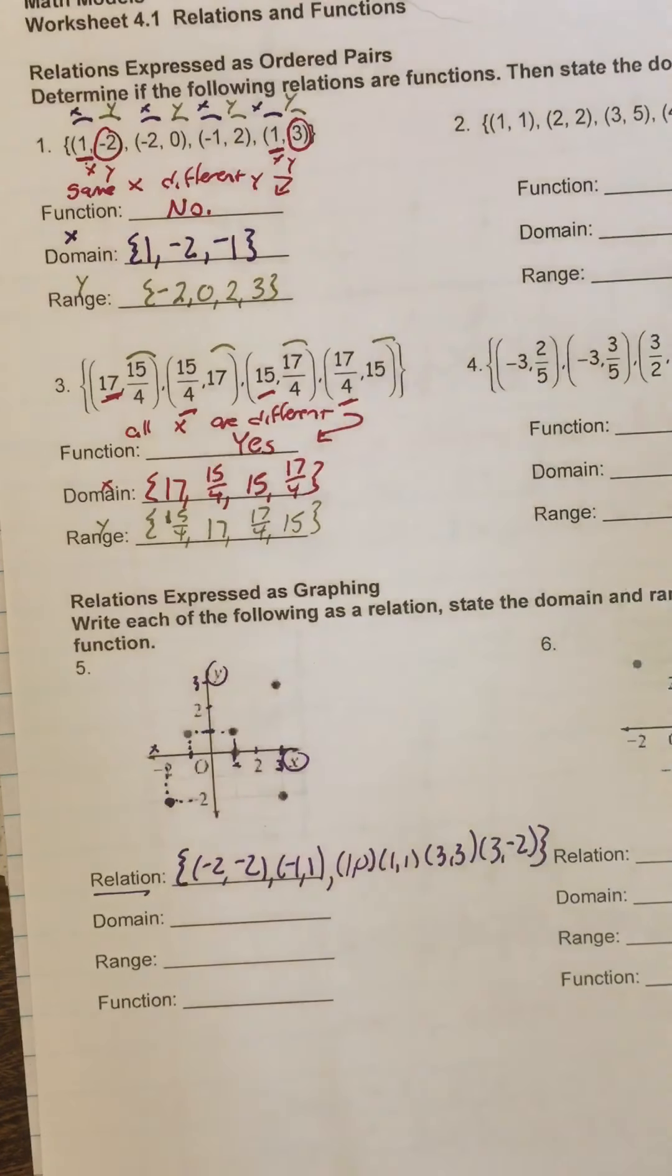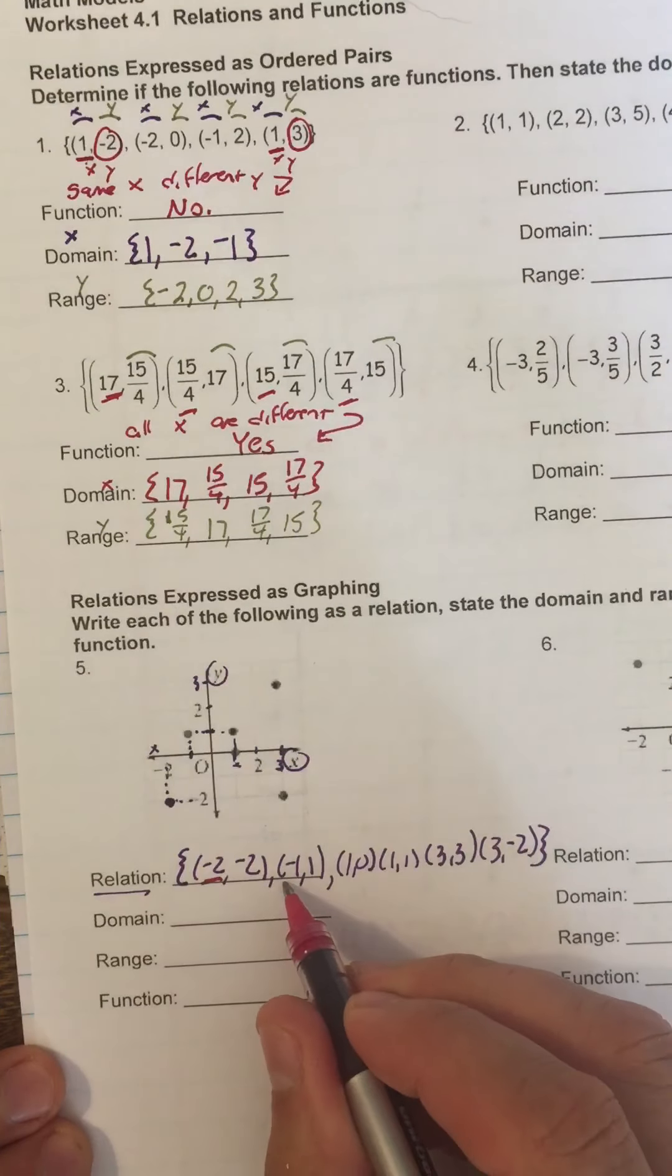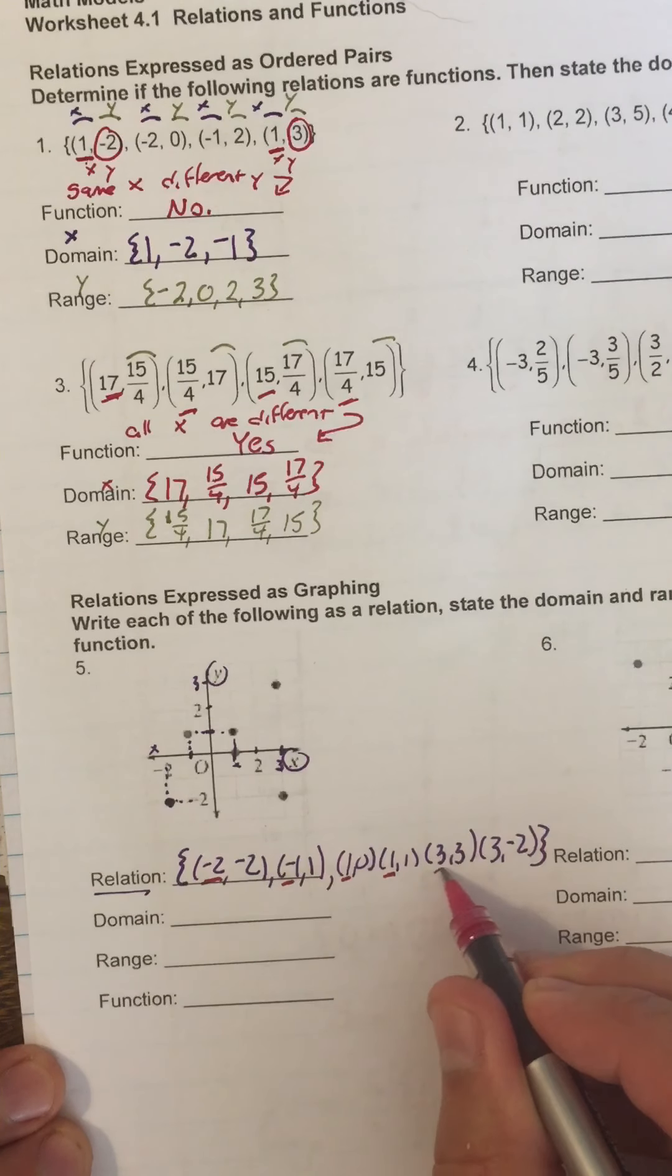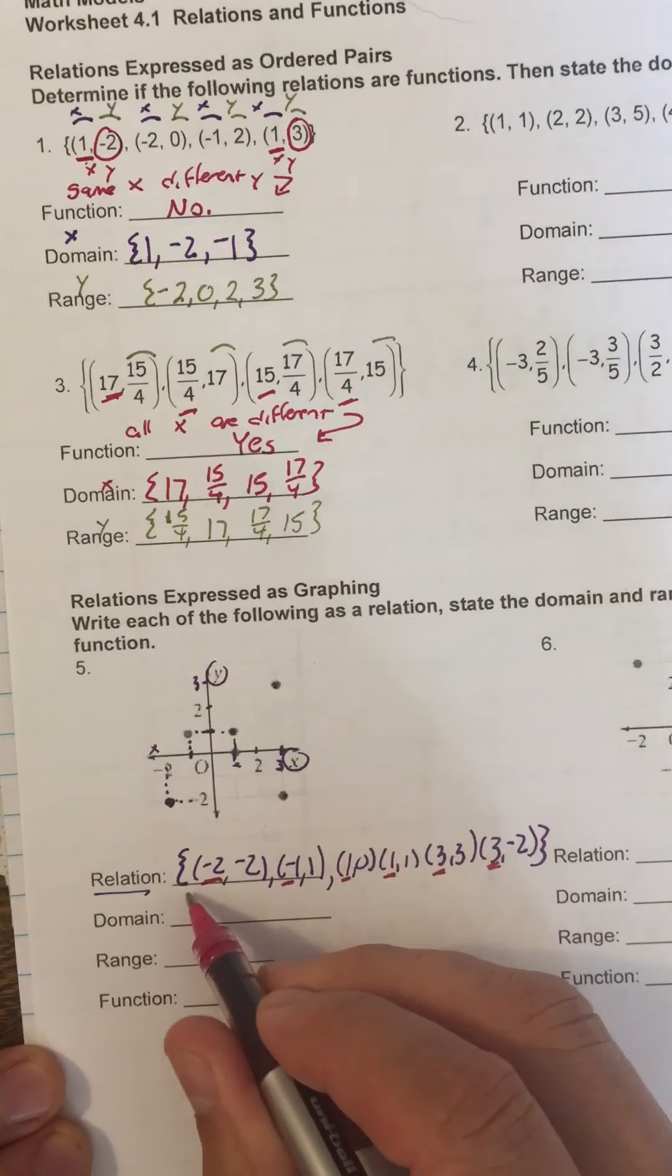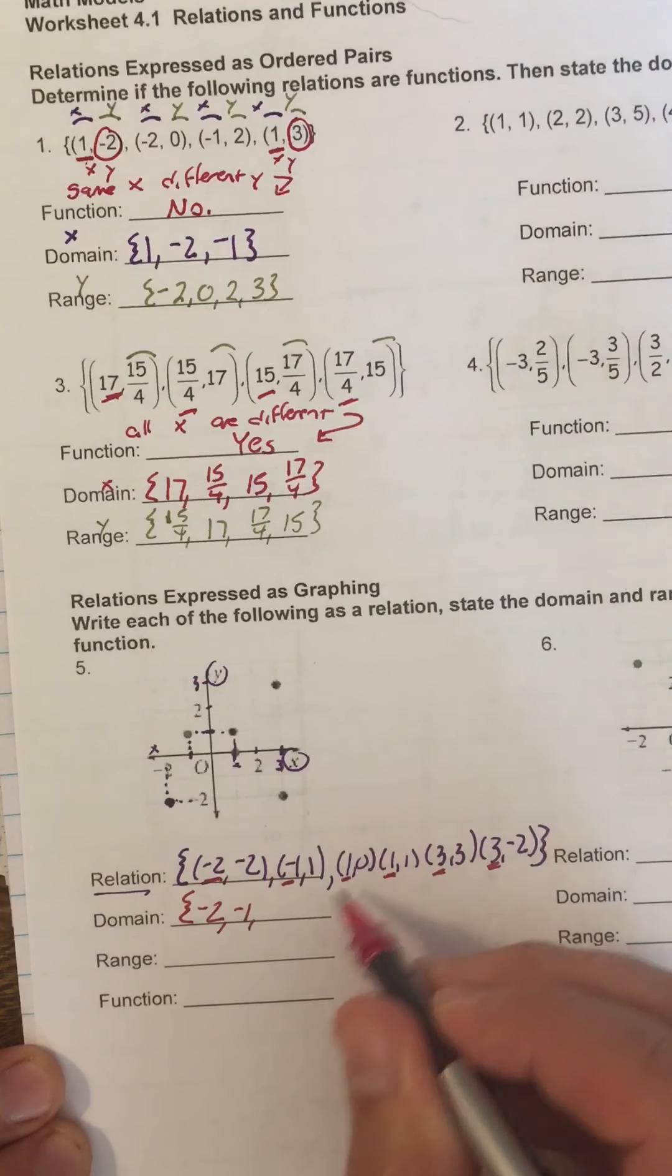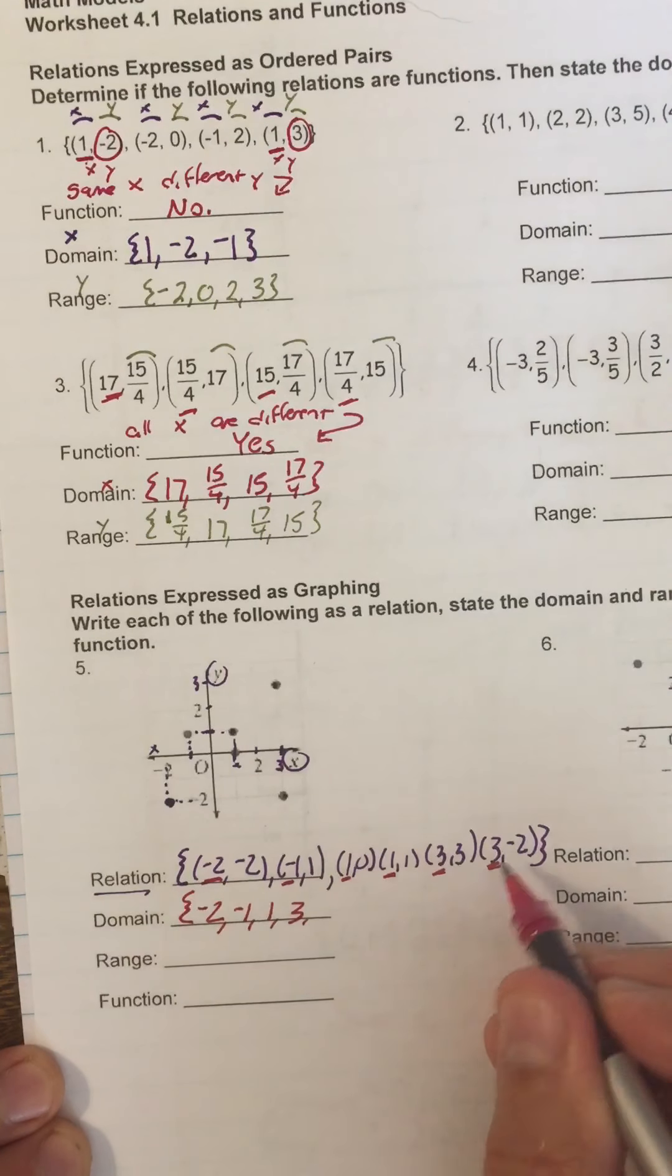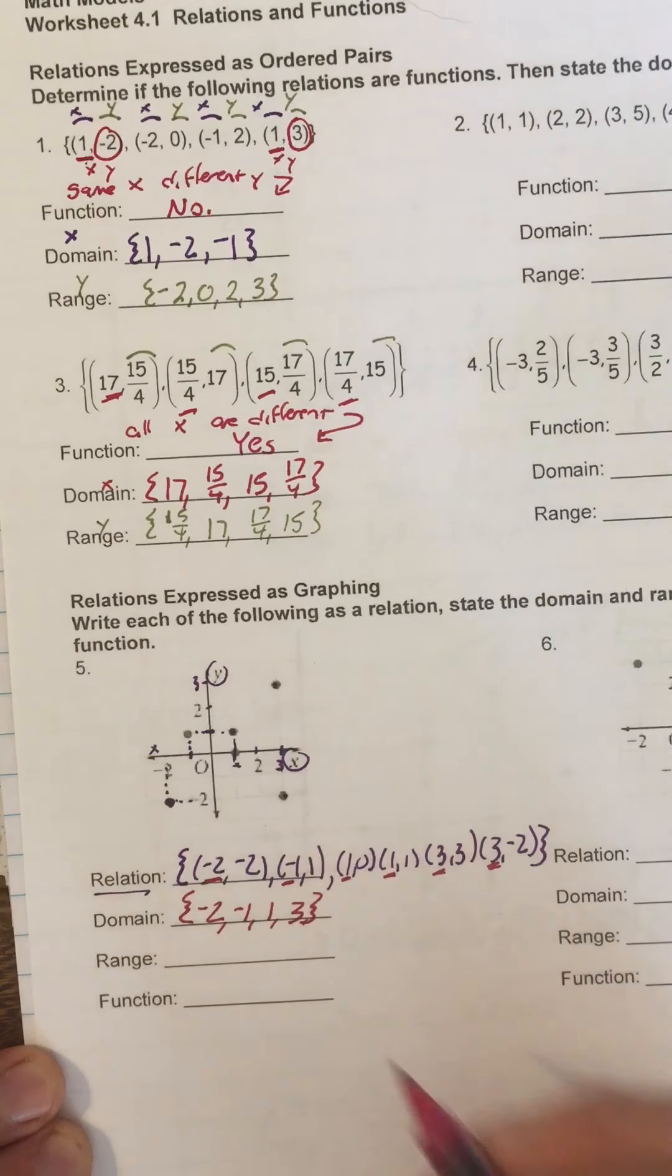Now everything else I do the same. What is the domain? It's all the x coordinates. Negative 2, negative 1, 1, 1, 3, 3. I don't have to say them twice, so negative 2, negative 1, 1. We already have 1, 3. We already have 3, so we can close the bracket.